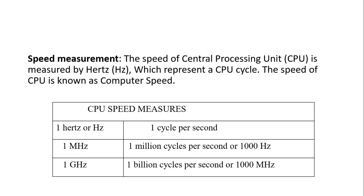Processing speed, or CPU speed, is measured using hertz (Hz). One hertz is one cycle per second. When there are a million cycles per second, we say it is a megahertz. When it is a billion cycles per second, we say it is a gigahertz. Most machines today run at speeds like 3.8, 3.5, or 2.1 gigahertz. Hertz, megahertz, and gigahertz are the units of measure of CPU speed.